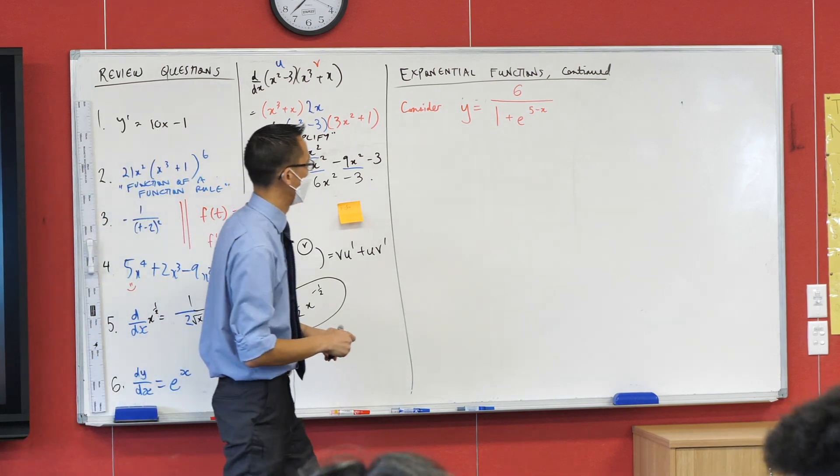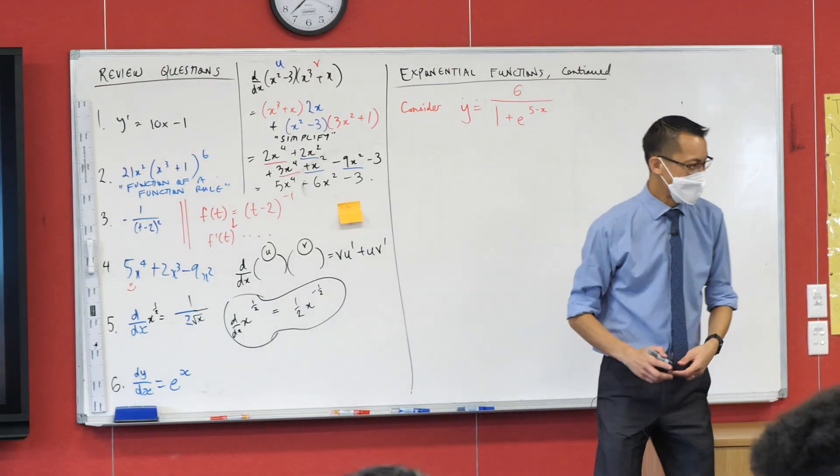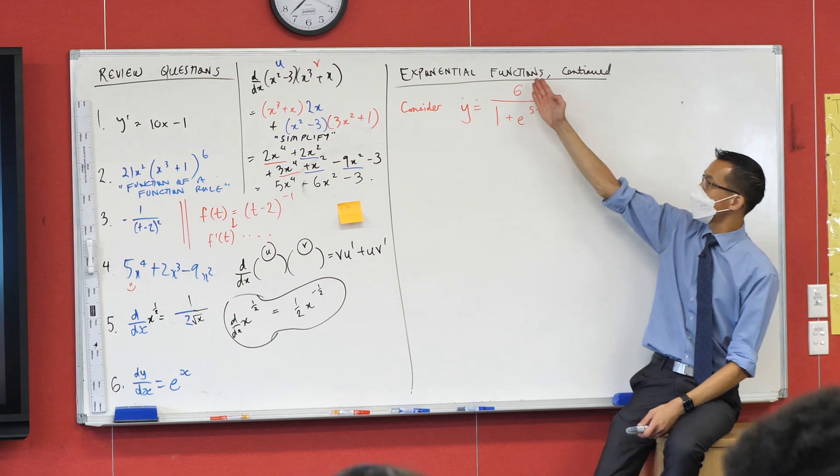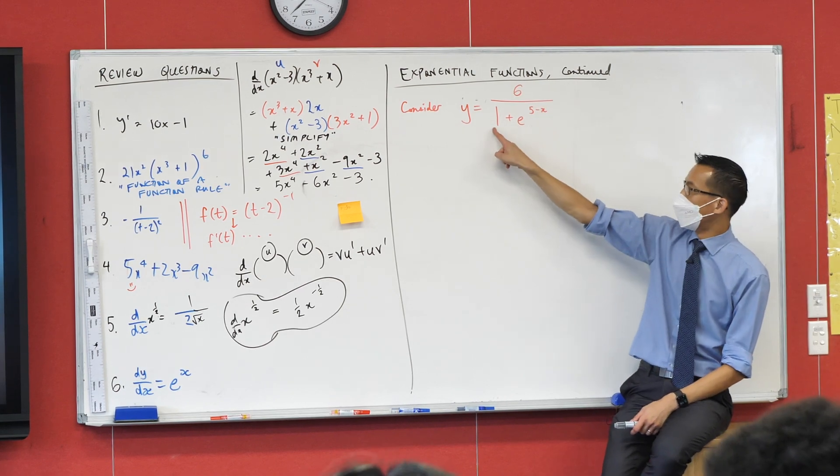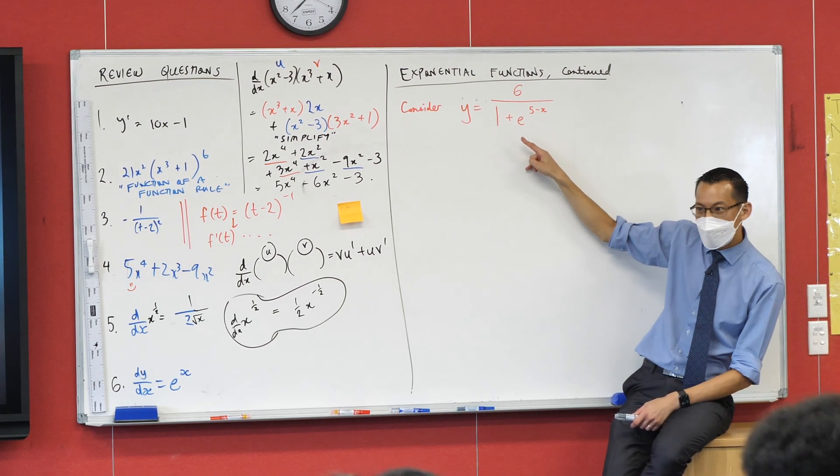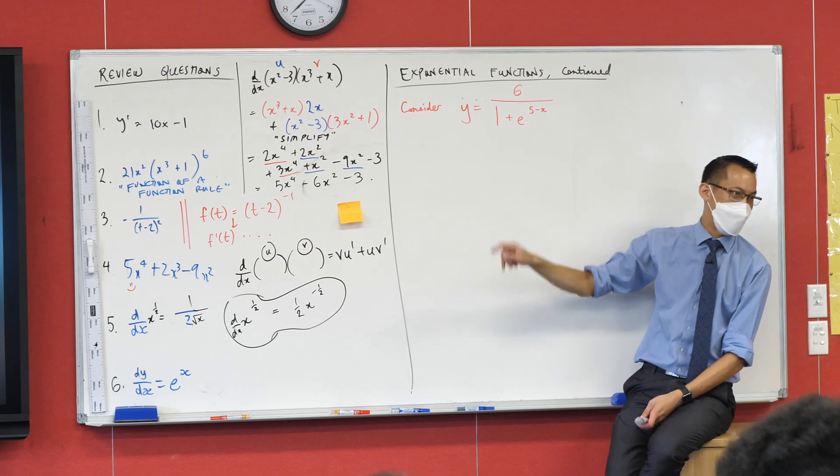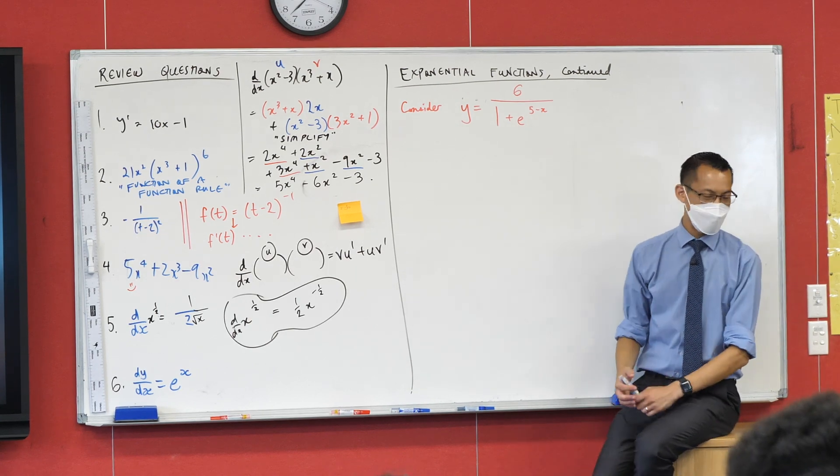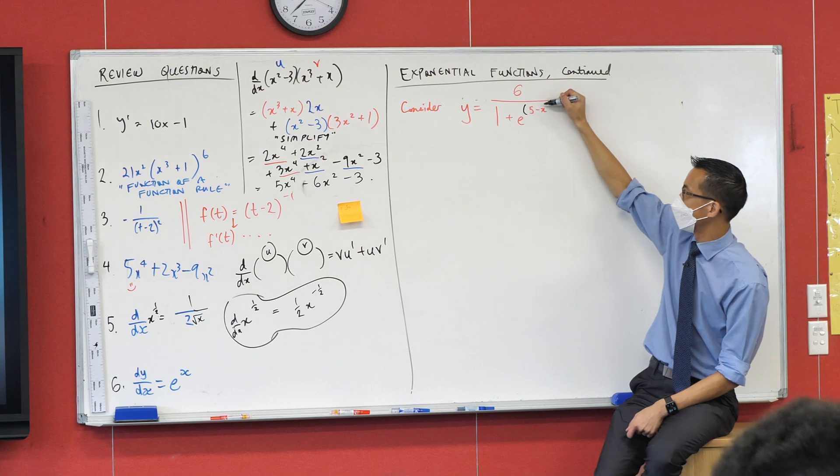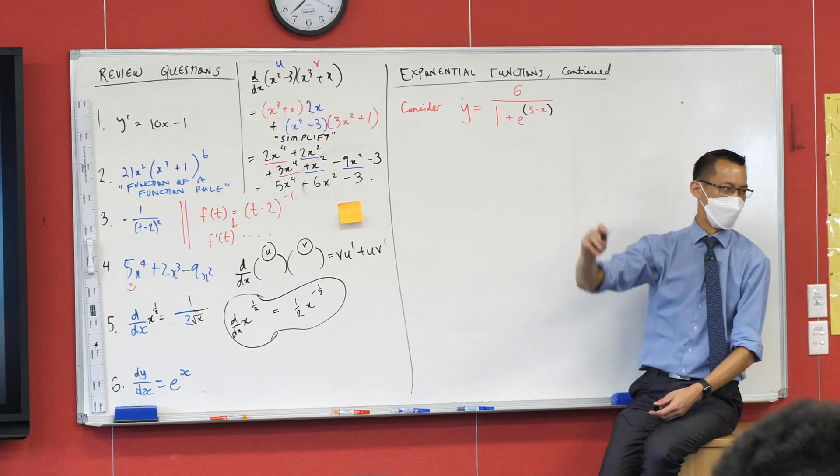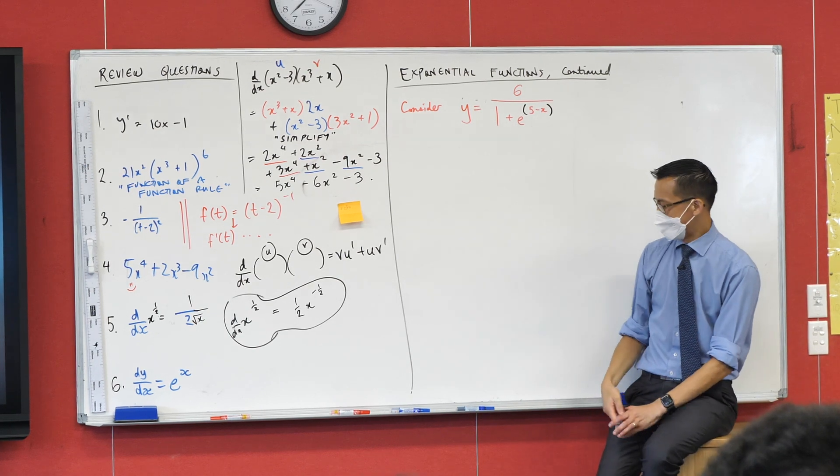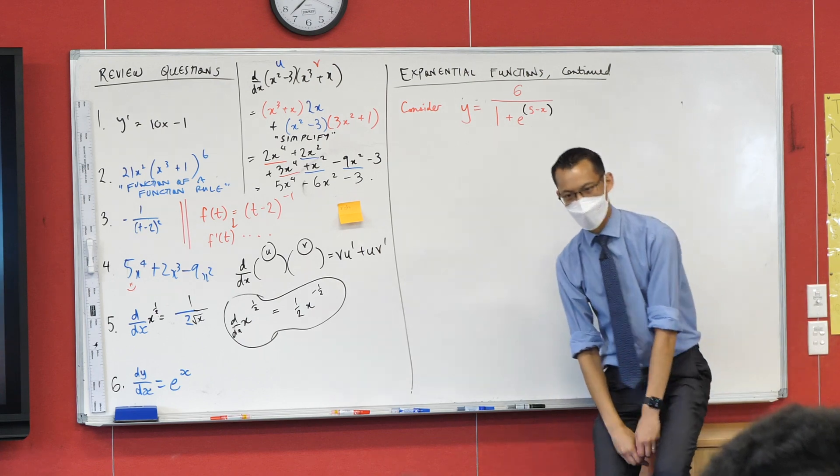Now just as a minor thing which will help you use Desmos more helpfully: if I read this out right, it is 6 divided by 1 plus e to the power of 5 minus x. Desmos will be happier with you if you try to put a bracket here. It'll automatically put one on the end for you, just trying to do you a favor. If you type something else it'll give you something rather different.